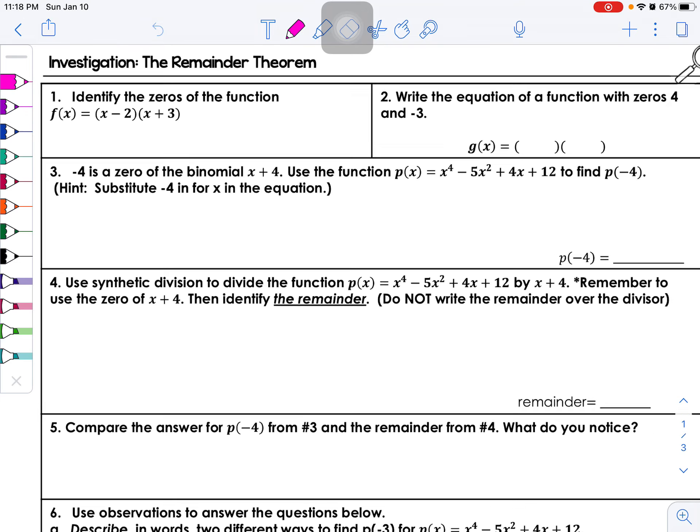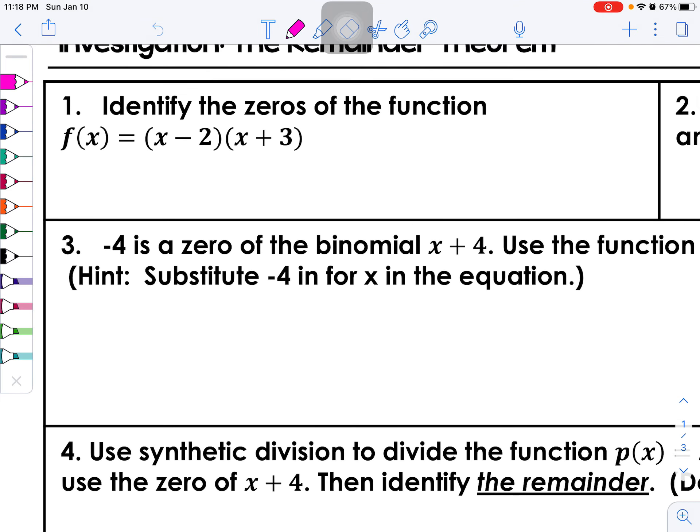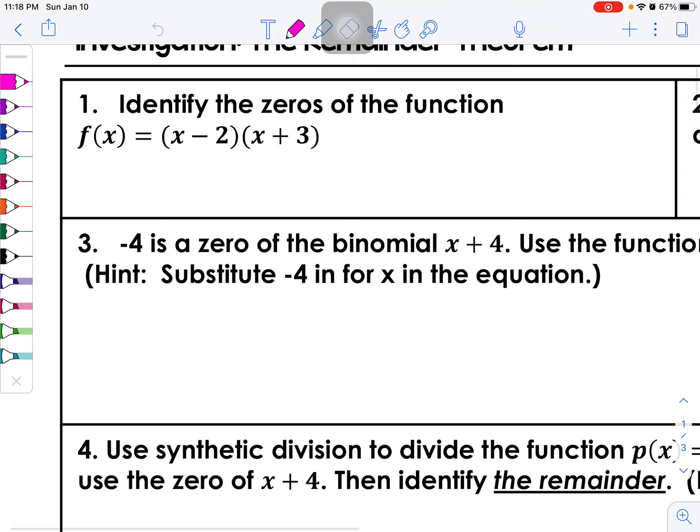So we're going to go through some different problems here. The very first problem says to identify the zeros of the function. Well, if we're going to identify the zeros, we're going to set each factor equal to zero and solve. So x equals 2 and x equals negative 3 are the zeros of the function.